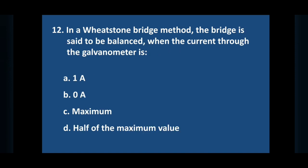Question number 12: in a Wheatstone bridge method the bridge is said to be balanced when the current through the galvanometer is. Answer is option B, zero ampere.